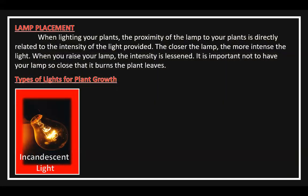Incandescent light: Although some supplemental light is better than none, incandescent light offers the lowest level of intensity and is generally better used as room light than a plant light. Specialty incandescent grow bulbs are available and will provide a better light spectrum than a standard incandescent bulb, but the intensity is still limited. Standard incandescent bulbs are high in the red spectrum but low in the blue spectrum, which most plants need for vegetative growth. Incandescent bulbs are inexpensive initially, but they are generally not efficient or effective for plant growth.